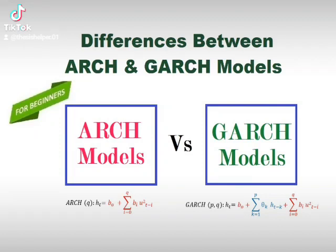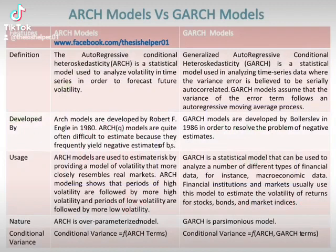Differences between ARCH and GARCH models. The Autoregressive Conditional Heteroscedasticity, ARCH, is a statistical model used to analyse volatility in time series in order to forecast future volatility. Whereas Generalised Autoregressive Conditional Heteroscedasticity, GARCH, is a statistical model used in analysing time series data where the variance error is believed to be serially autocorrelated.